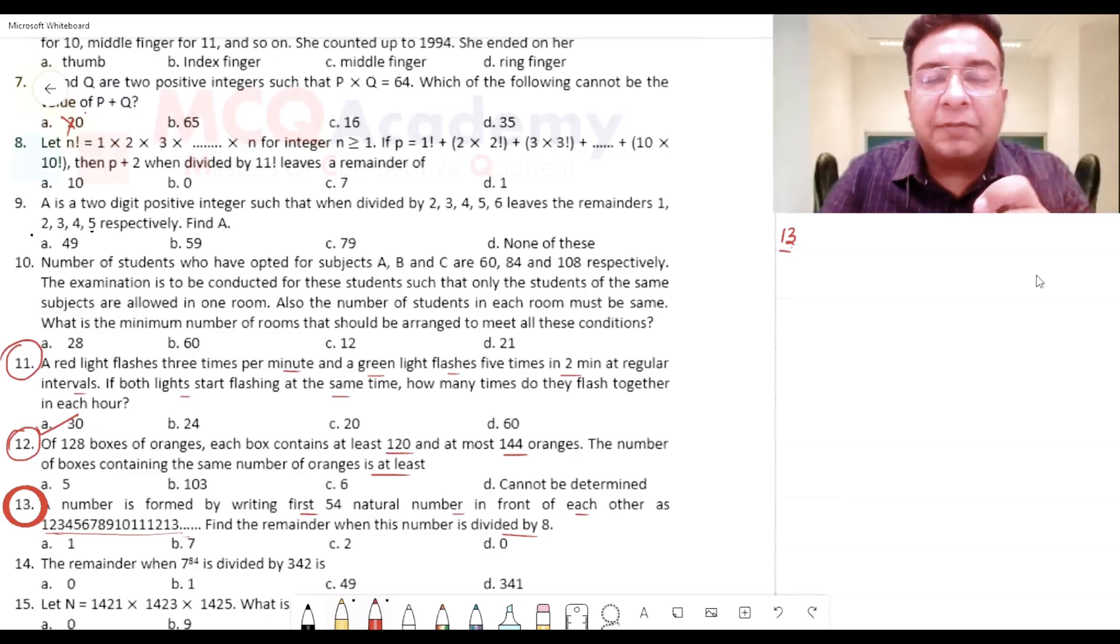If you are writing 54 natural numbers like this, then the divisibility rule is that the number formed by the last three digits should be divisible by 8. That means, can I know the last three digits of this number?